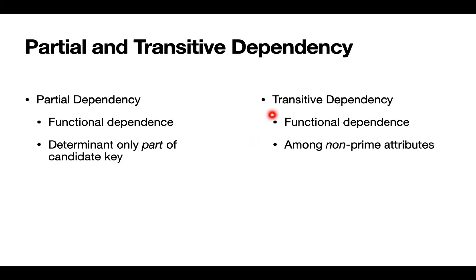Similarly, transitive dependencies are also functional dependencies, but these are functional dependencies among non-prime attributes. A prime attribute is one that participates in some candidate key, and a non-prime attribute is one that isn't in any candidate key. These transitive dependencies can be identified by looking for dependencies in the data that aren't really tied to a key at all. Just like we use partial dependencies to help us move from first normal form to second normal form, we'll use transitive dependencies to move from second normal form to third — spun a little differently using this notion of dependency diagrams.